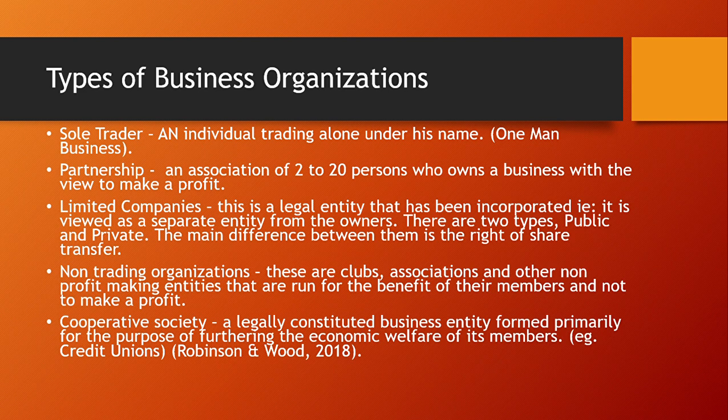The main difference between public and private companies is the right of share transfer. In a public company you can sell shares to the public; in a private company you can only sell shares privately, like to family or friends. The private company is generally smaller. The public company has no upper limit on members — you need a minimum of seven shareholders to start one. For a private company, the minimum is two shareholders and the upper limit is fifty.